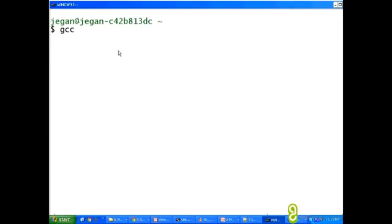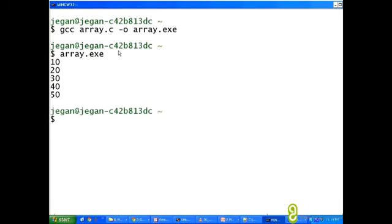Let's compile it: gcc array.c -o array.exe. It gets compiled properly without any issues. We'll run it and it prints. That's it.